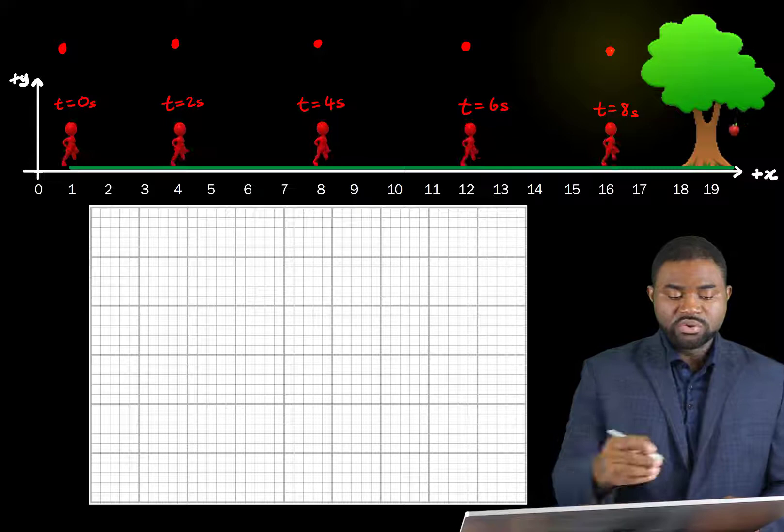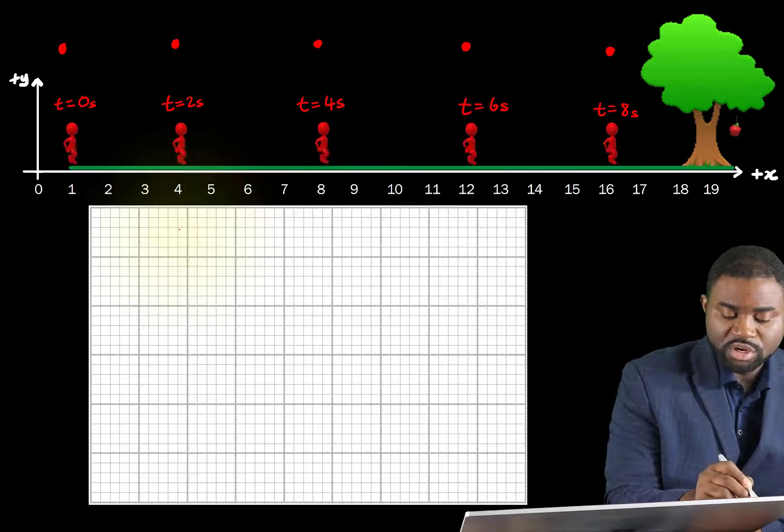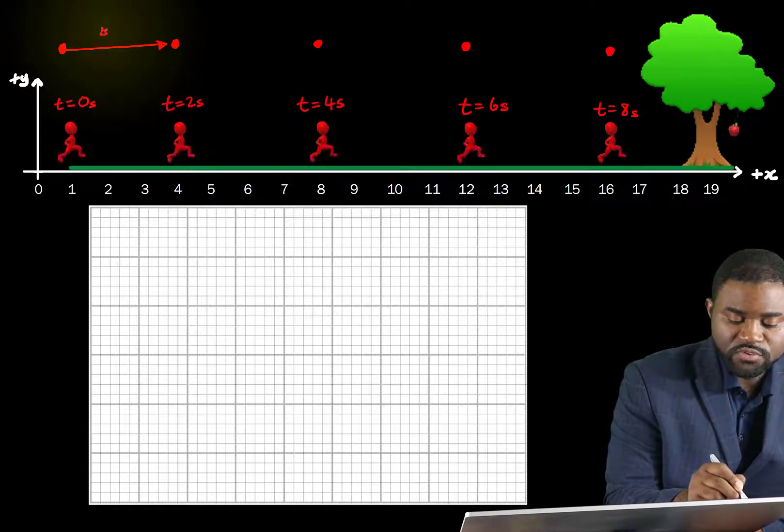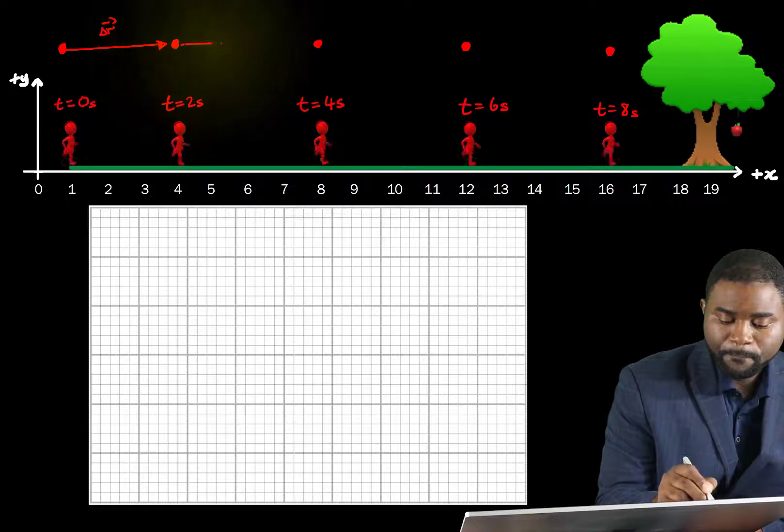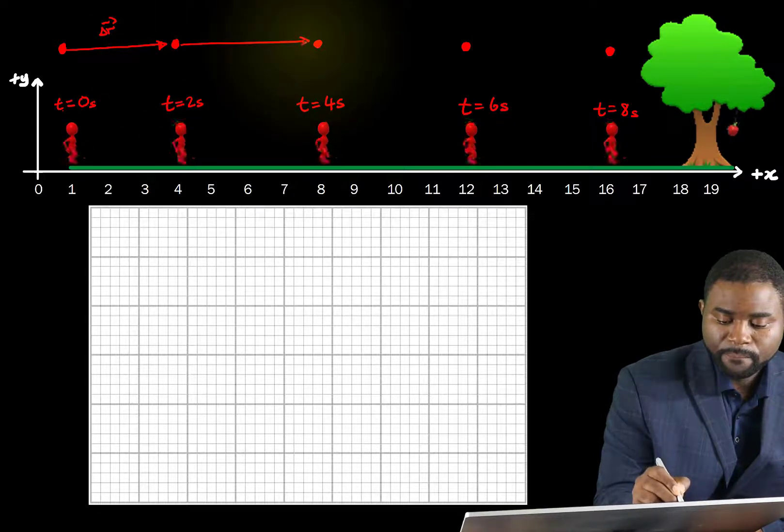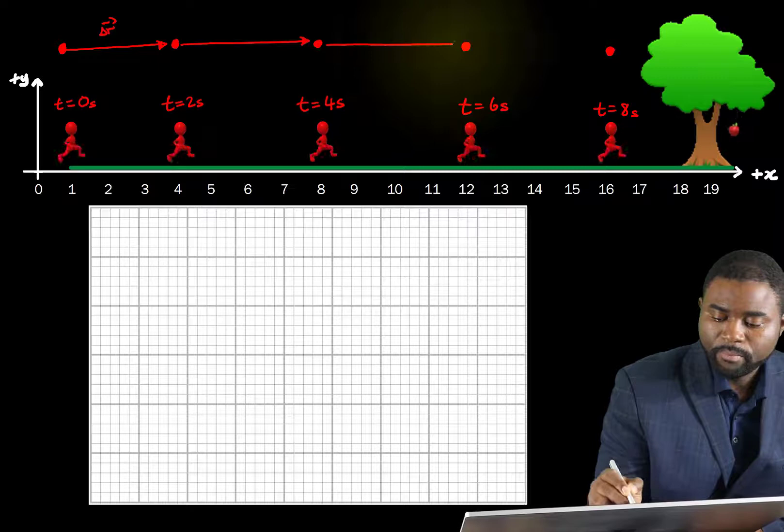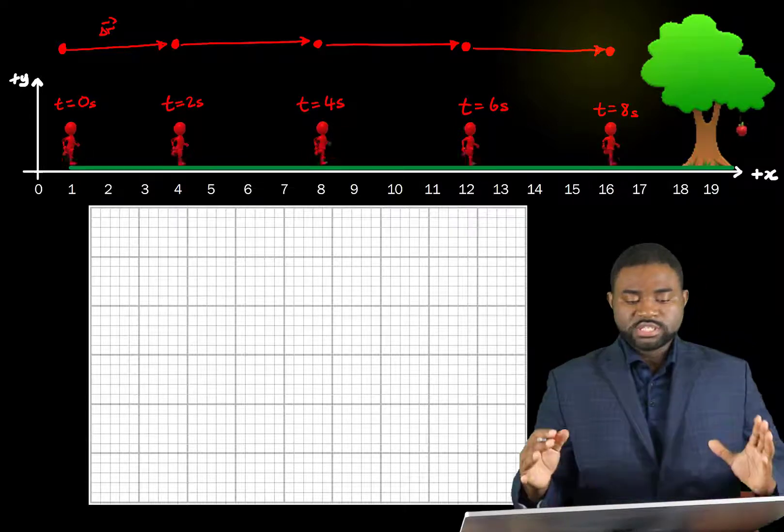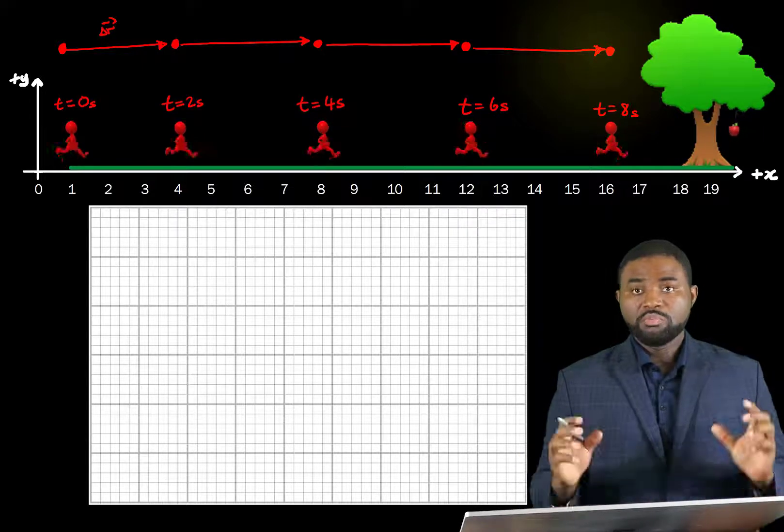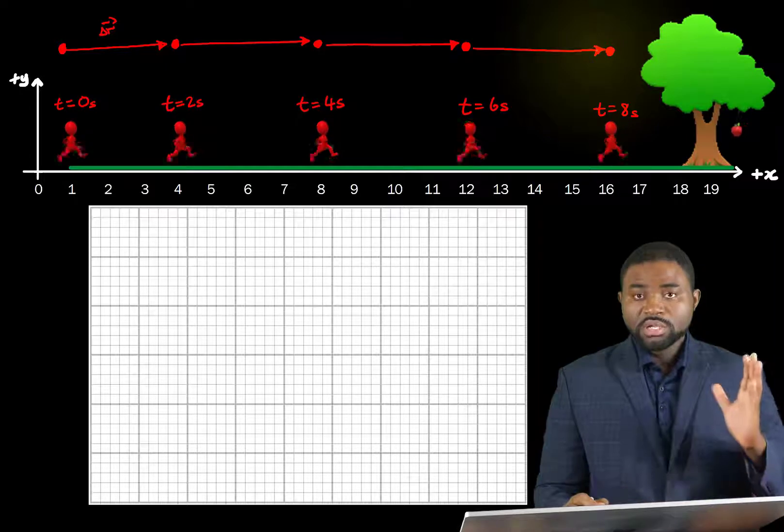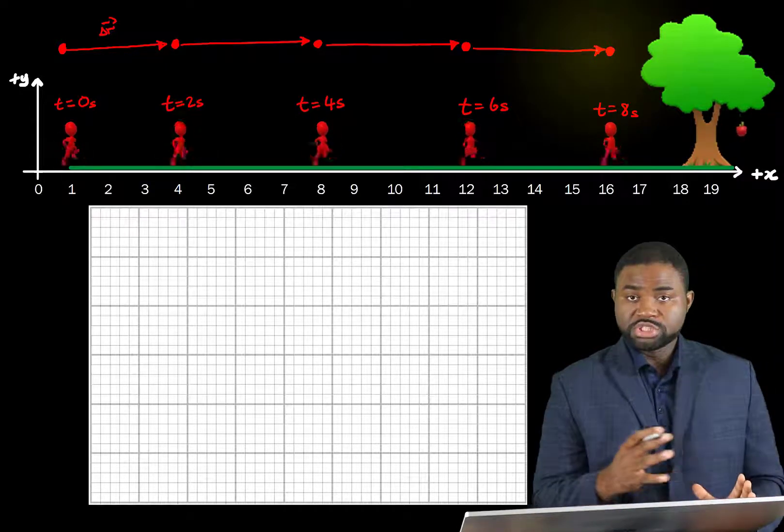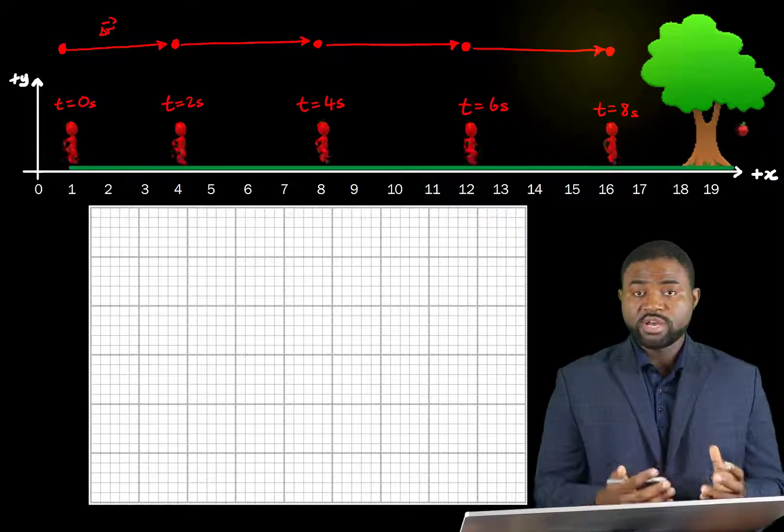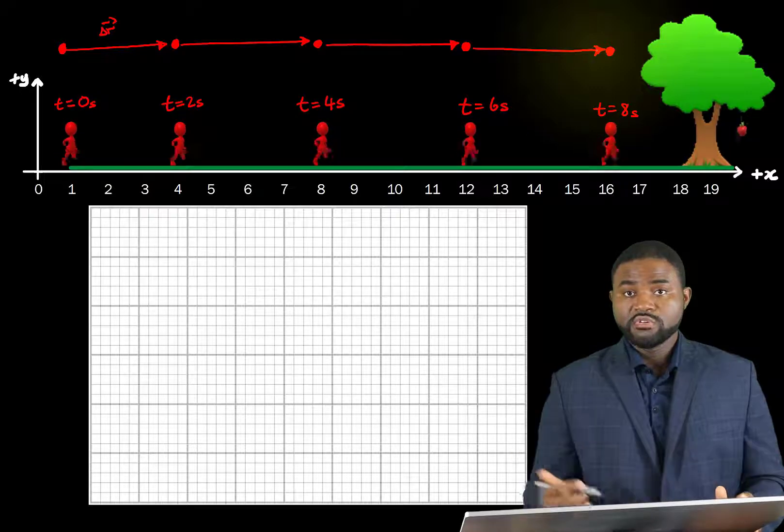Now we can then include arrows between each dot to signify his displacement. This here will signify delta R. We call this diagram a motion diagram that actually represents his position as a function of time and it actually describes pictorially how his motion varies with time.